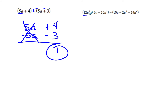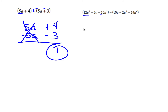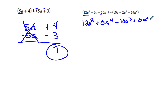Here we've got to be careful. We have 12a to the 5th. We do not have an a to the 4th, so we put 0a to the 4th as a placeholder. We have negative 10a to the 3rd. We do not have an a squared, so we put 0a squared. We do have an a, so we put minus 6a. There's a subtraction sign, so we change that to plus and change all the signs inside.